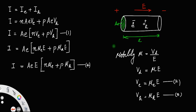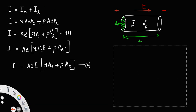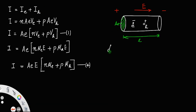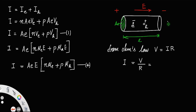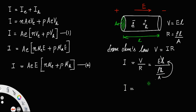Now on the left-hand side we have the current I. From Ohm's law, voltage equals I times R, so I equals V divided by R. Voltage is electric field times length, V equals E·L. Also, resistance R equals resistivity ρ times length L divided by cross-sectional area A, so R equals ρL over A. Substituting, the L cancels and A moves to the numerator, giving I equals E·A divided by ρ. Let us call this equation number 5.